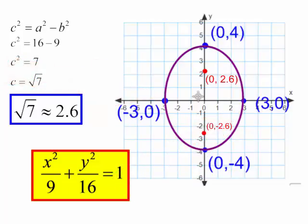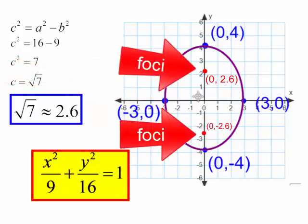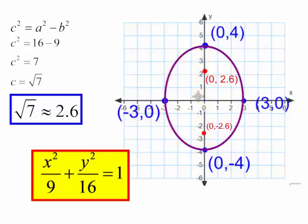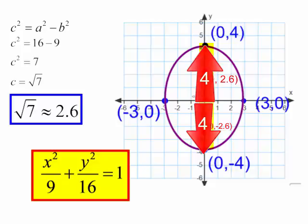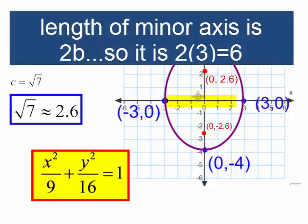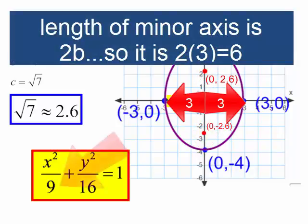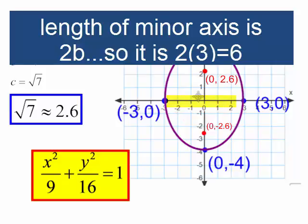We also found the foci. The foci are located on the major axis. Once I found that c was approximately 2.6, from the center, I went up 2.6 and down 2.6. The major axis is 2 times a, which is 2 times 4, which is 8. The minor axis is 2 times b. b is the square root of 9, which is 3, and 2 times 3 is 6. The minor axis is 6.